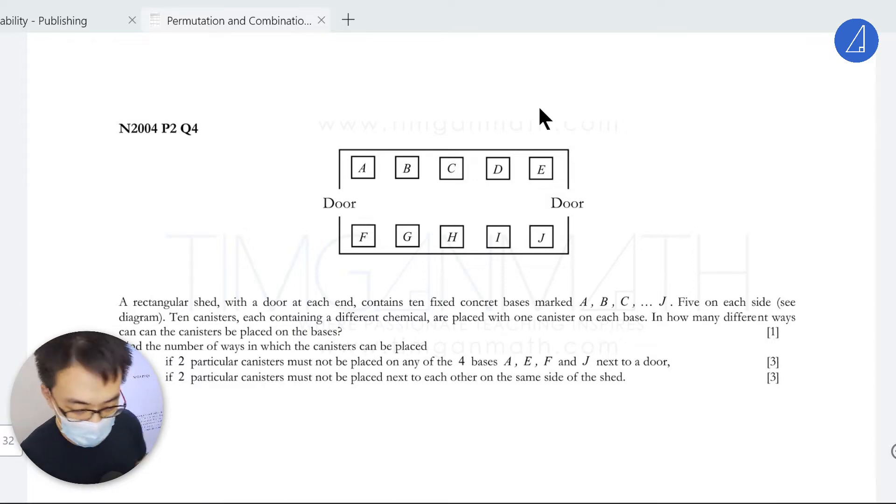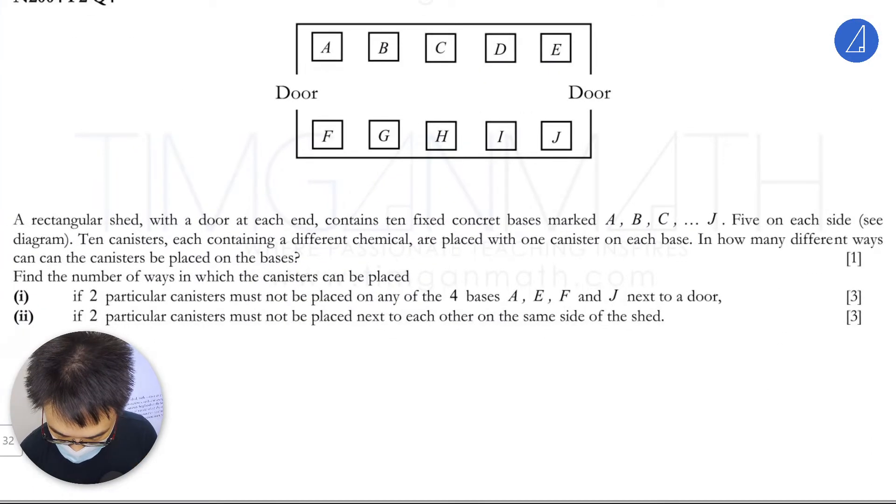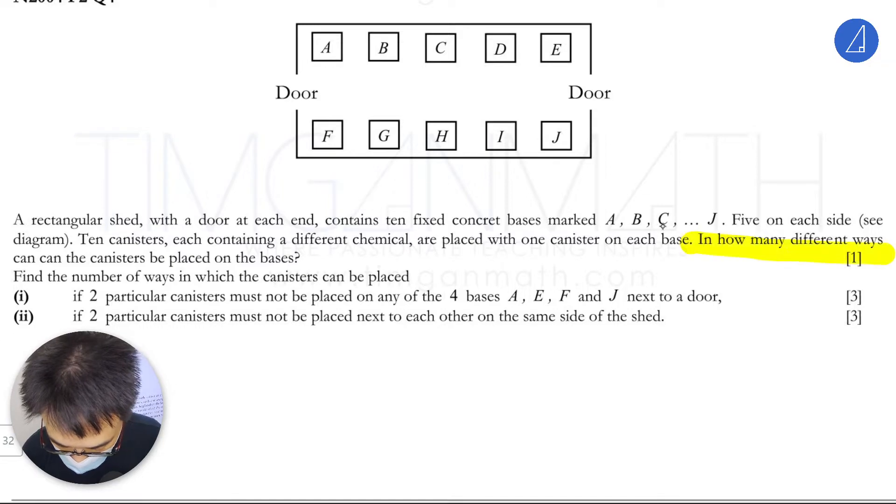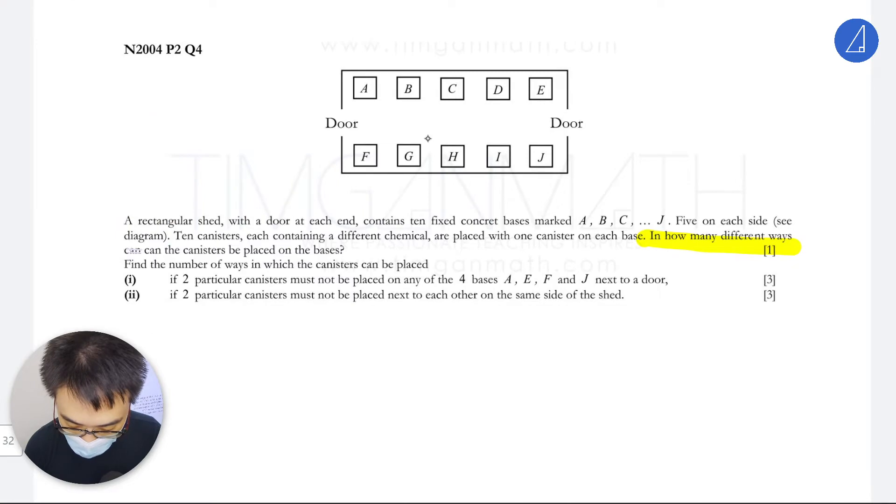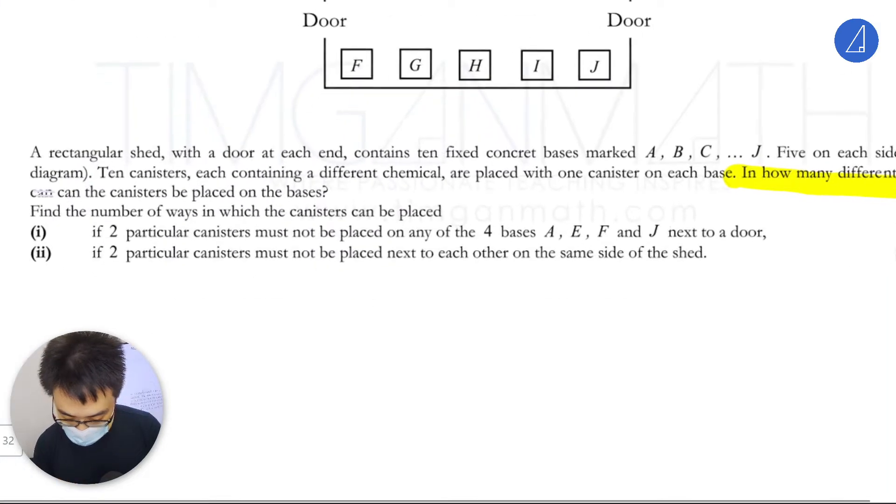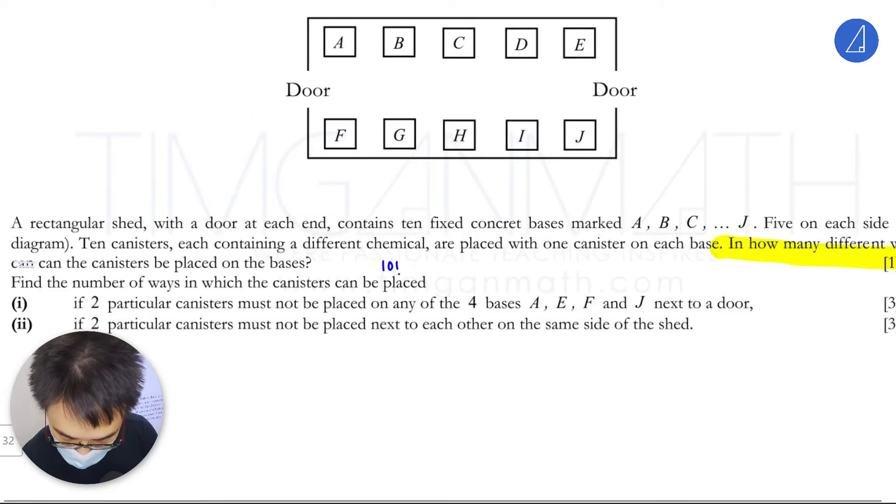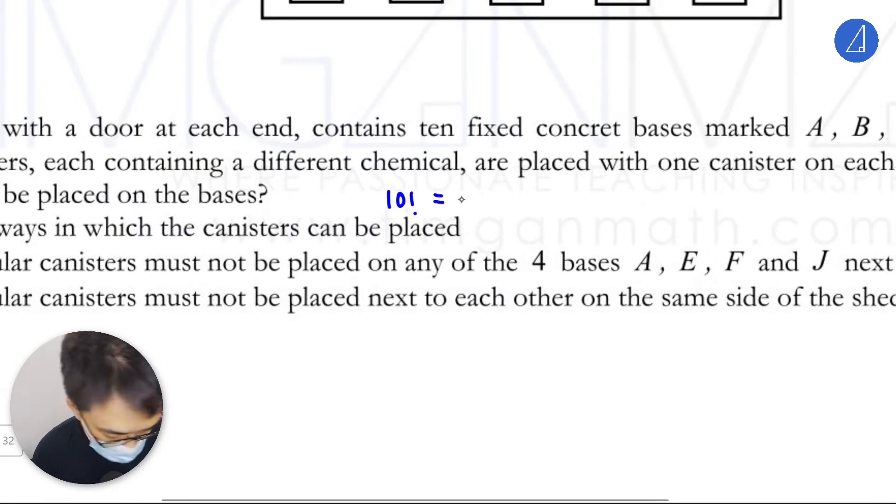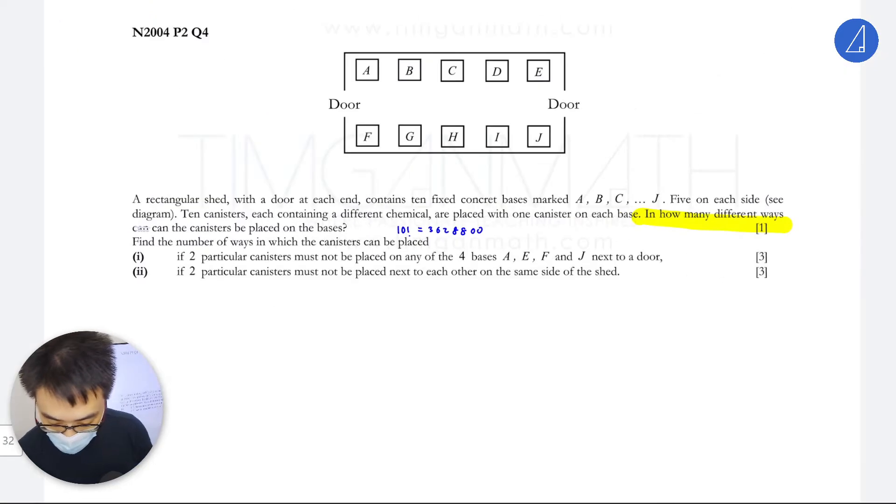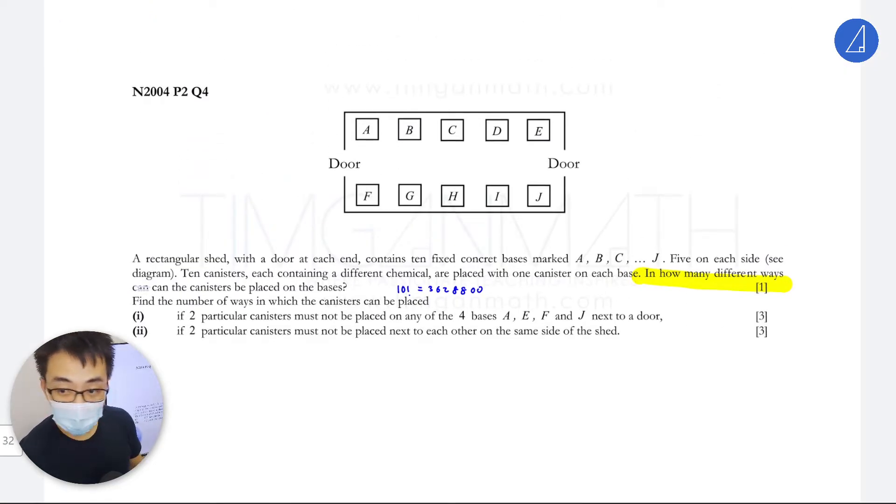For this case, how many different ways can the canisters be placed on the bases? There are 10 canisters, so it's 10 factorial. The positions are all distinct, so the answer is 10 factorial, which equals 3,628,800.